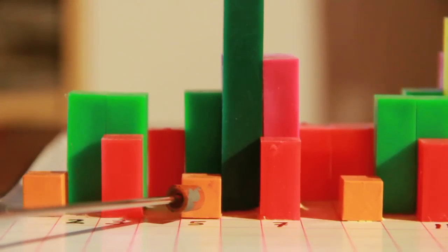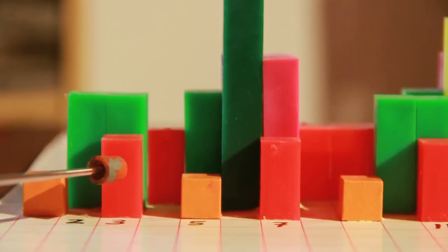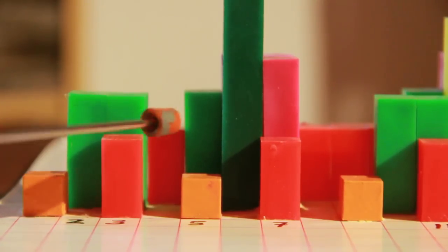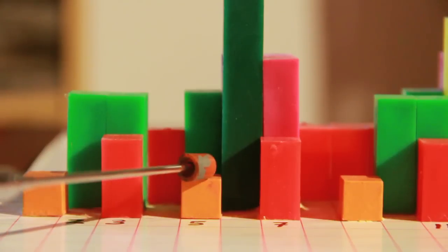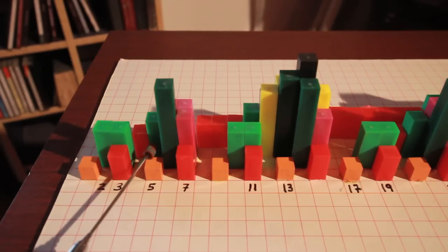All cubes are orange while columns have different colors and heights. For example, five is represented by a cube followed by an empty space and a green column.